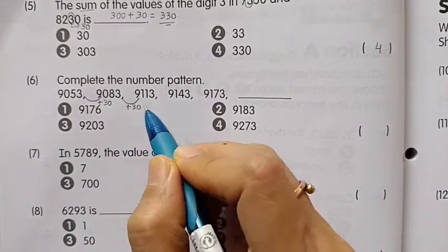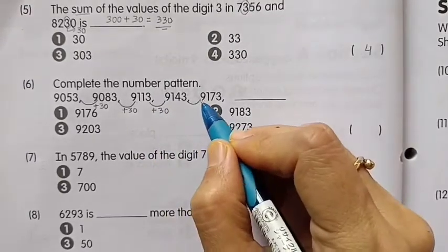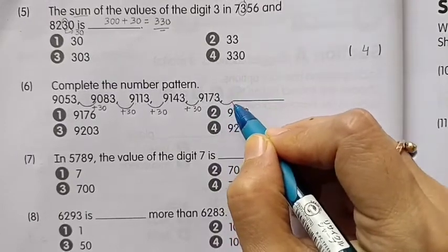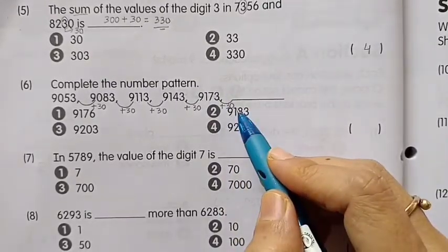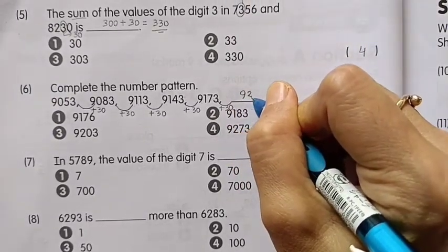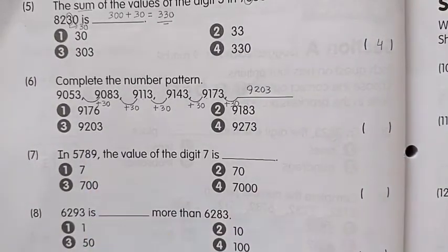Each number has a difference of 30, and they are in increasing order. So the last number we add by 30, and we got the answer 9203. The answer is number 3.